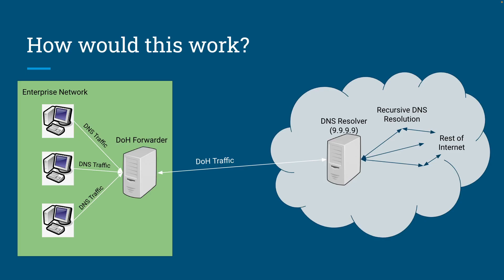That's a basic look at what we're trying to do with this DOH forwarder. One benefit I haven't mentioned yet is that on top of the original forwarder benefits — load balancing, caching, and other operational advantages — the DOH forwarder also adds security benefits. Because all the traffic leaving our network is now encrypted, even if somebody intercepts it outside, it's irrelevant because it's encrypted. That's why DOH is nice, and it's even more secure than what a regular DNS forwarder provides.